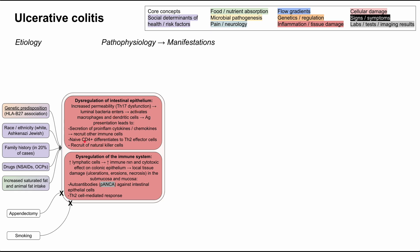Native CD4+ cells differentiate into Th2 effector cells, and NK cells are recruited. On the immune system dysfunction side, increased lymphatic cells lead to increased immune reaction and cytotoxic effects on the colonic epithelium. These two mechanisms create a vicious cycle — increased permeability causes immune dysregulation, which damages the epithelium further. The cytotoxic effect results in local tissue damage including ulcerations, erosions, and necrosis of the bowel wall, typically in the submucosa and mucosal layers — in contrast to Crohn's disease, which affects the full thickness of the bowel wall.